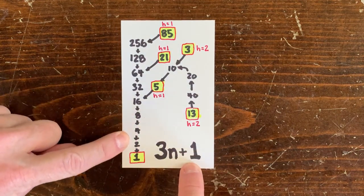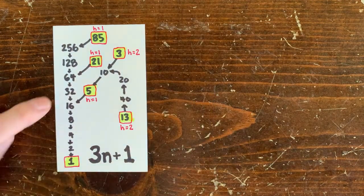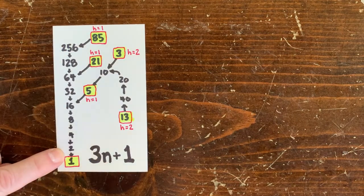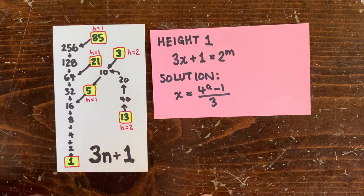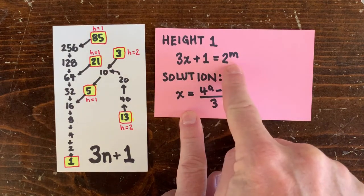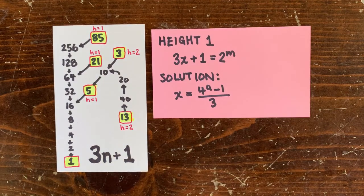In this video, we're going to ignore the even numbers when we count. Looks like 21 and 85 also have height 1. And we can make a formula for all the height 1 numbers. x has height 1 if we multiply it by 3 and add 1 and get some power of 2. Solutions are of the form x equals this.